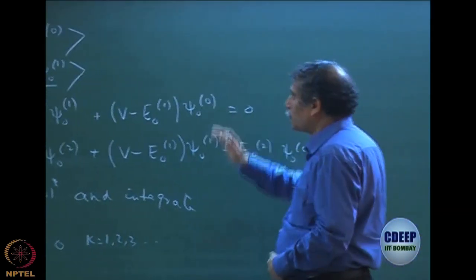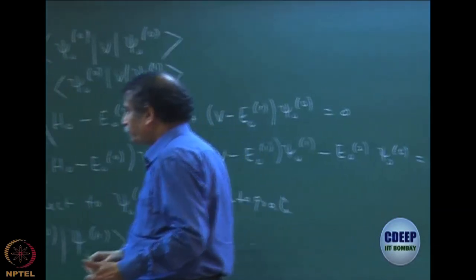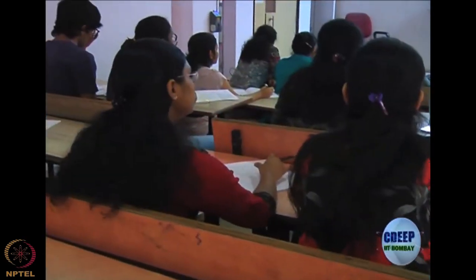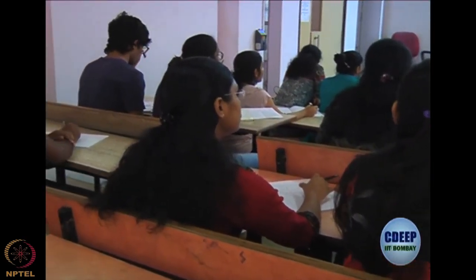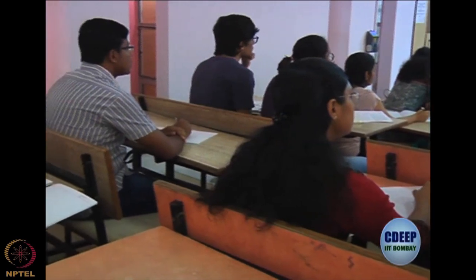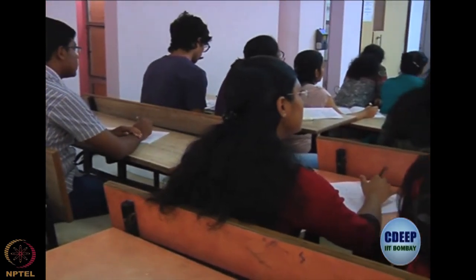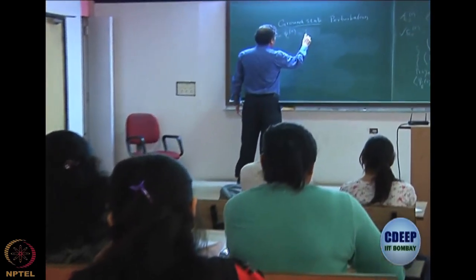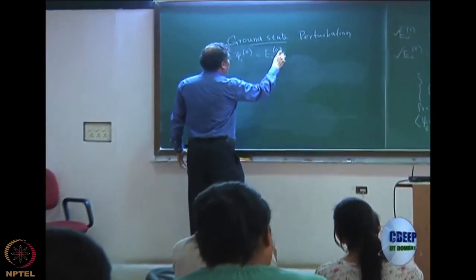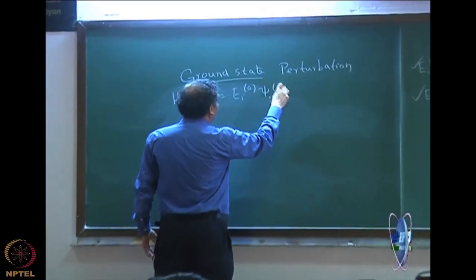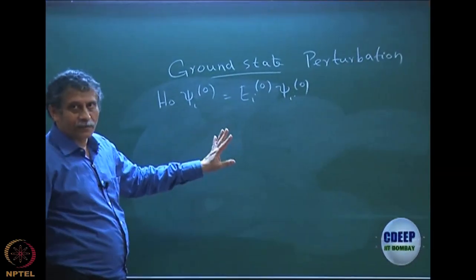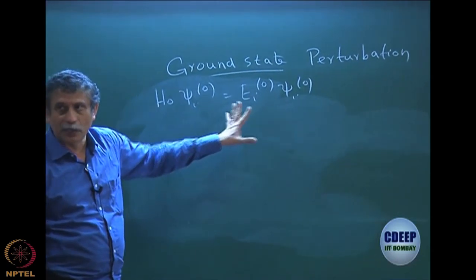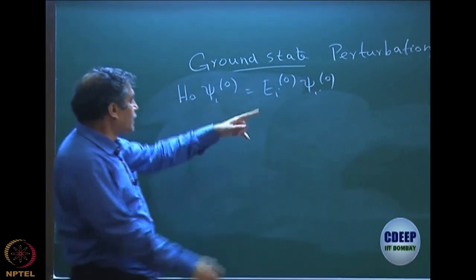Now this is what we will do today. Note that my eigenstates of H0 are completely known. H0 is a Hamiltonian whose eigenfunctions are completely known. Please be comfortable with the notations. Whenever I write superscript 0, those are the eigenstates of H0, which are completely known, and i is a different state: i = 0, 1, 2, 3, 4.